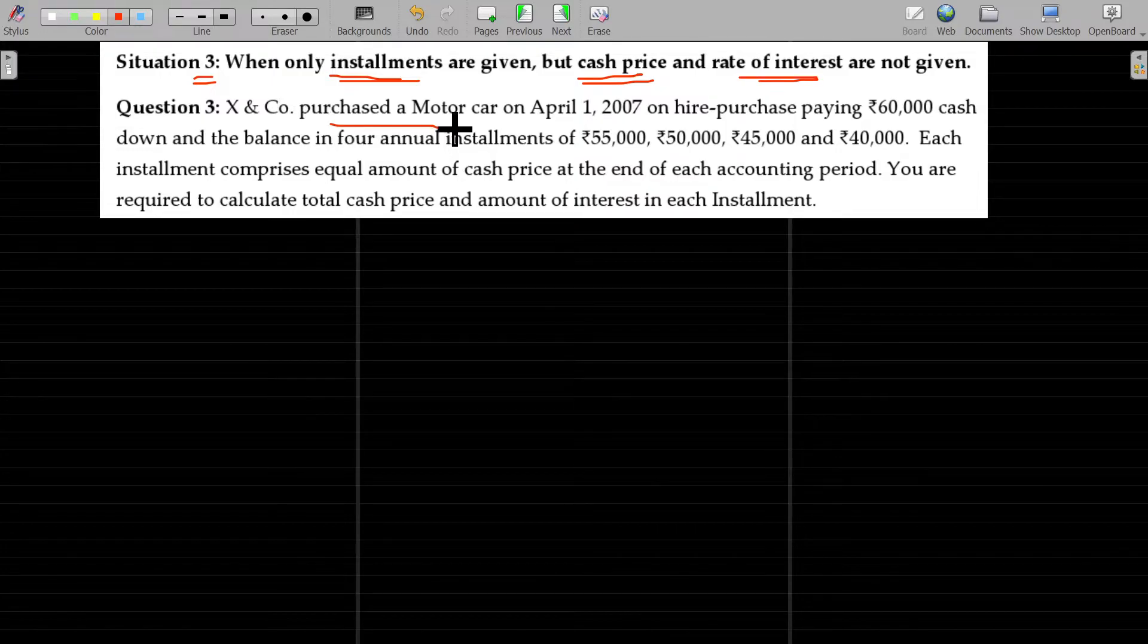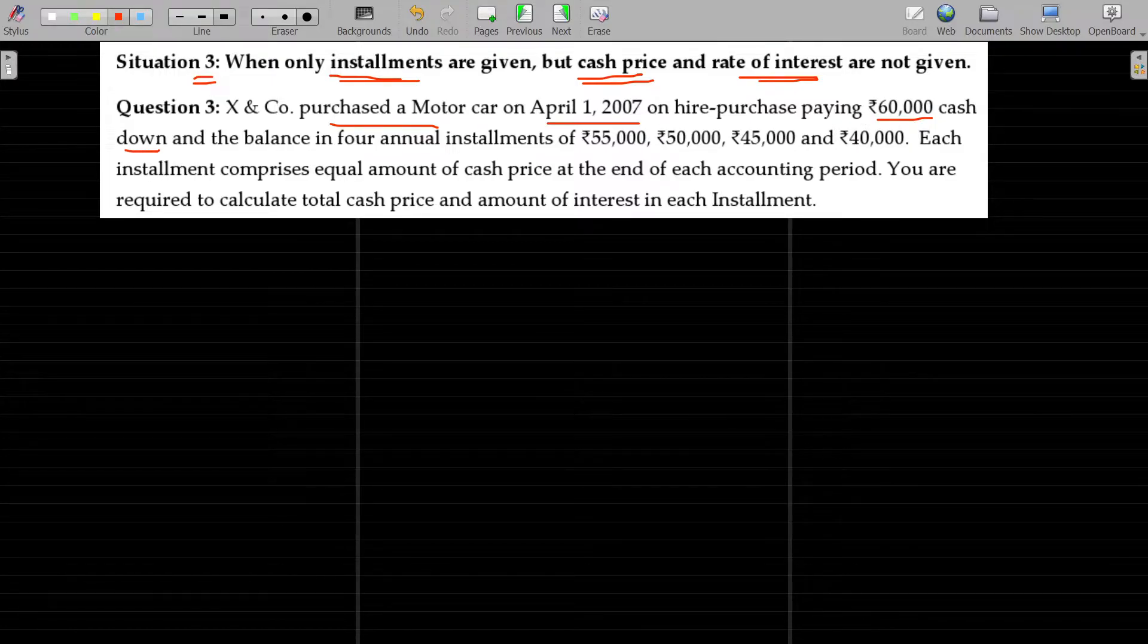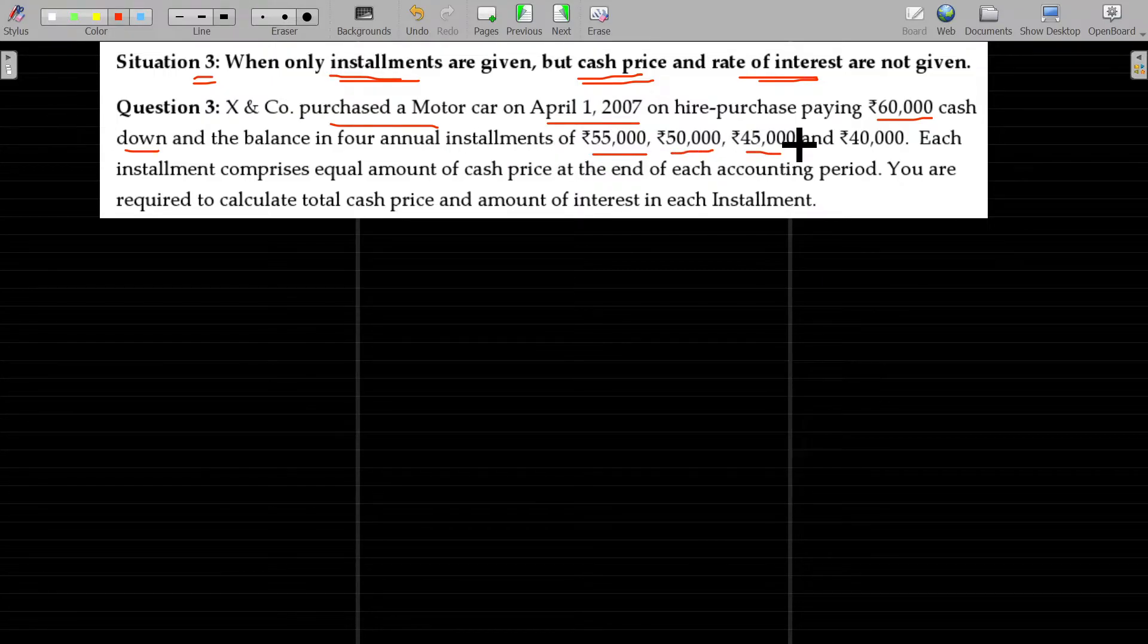X & Co purchased a motor car on April 1, 2007 on hire purchase, paying 60,000 cash down and the balance in four annual installments of 55,000, 50,000, 45,000 and 40,000.